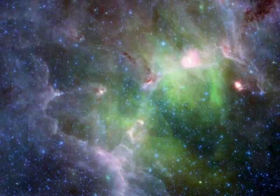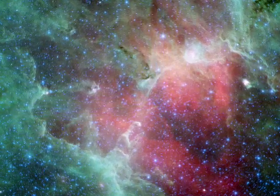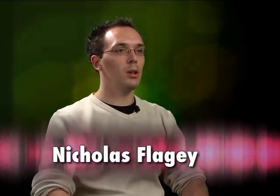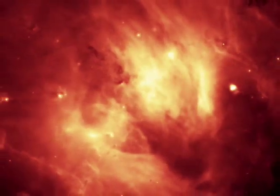Nicolas Flegé, a graduate student at the Institut d'Astrophysique Spéciale in Orsay, France, explains. When we use the seven infrared color images that Spitzer obtained from the Eagle Nebula, we see that six of them look almost exactly the same. But one of them, the 24 micron image, is completely different from the others.